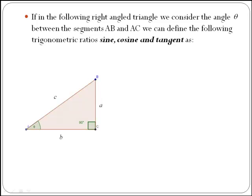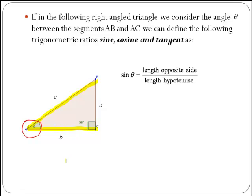If in the following right-angled triangle we consider the angle theta, the angle between segments AB and AC, we can define the three main trigonometric ratios: sine, cosine, and tangent. Sine of theta is the length of the opposite side over the length of the hypotenuse.